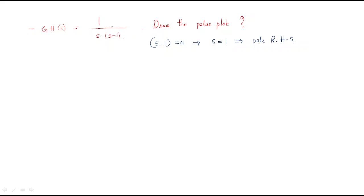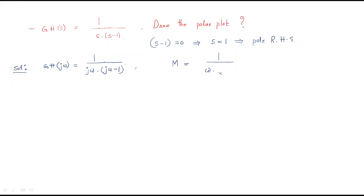Whenever you are dealing with right-hand side poles, you have to be careful. First, convert the given model into the frequency domain: GH(jω) = 1 / [jω(jω - 1)]. The magnitude value equals 1 / [ω · √(ω² + 1)].